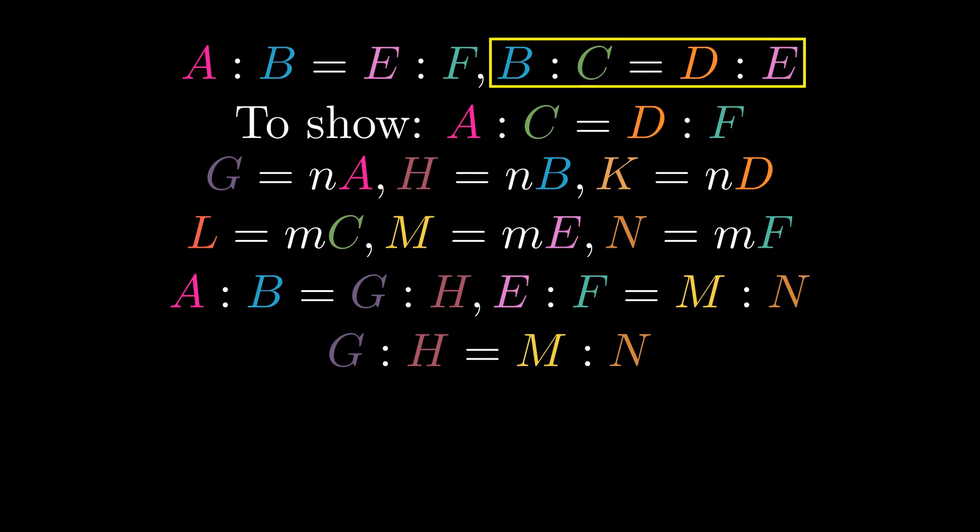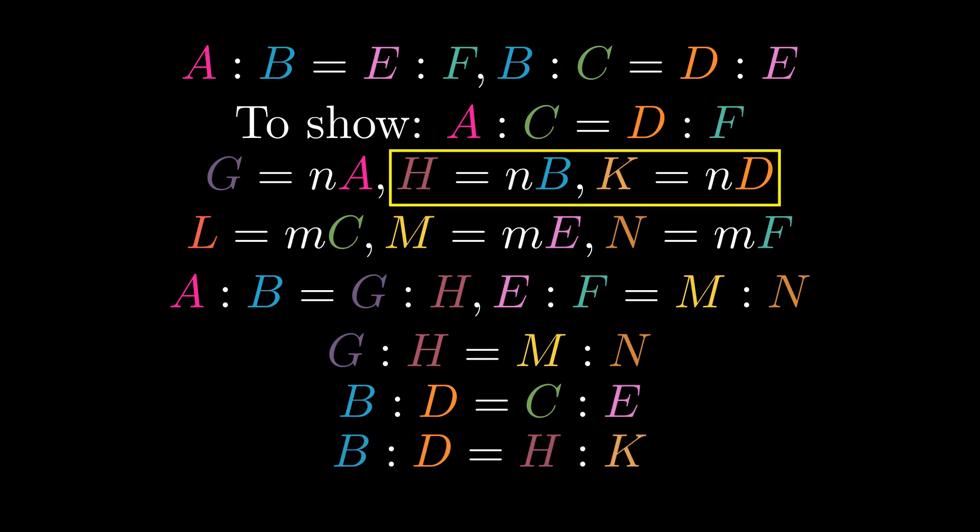B to C is proportional to D to E, so the alternate ratios are proportional as well. So, B to D is proportional to C to E. But B to D is also proportional to H to K, since H and K are respective equal multiples.